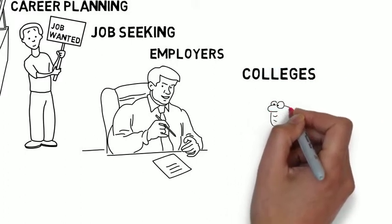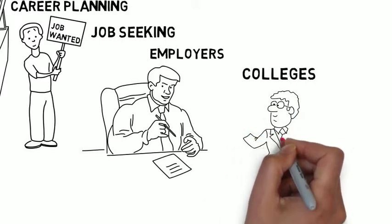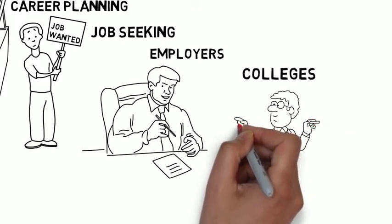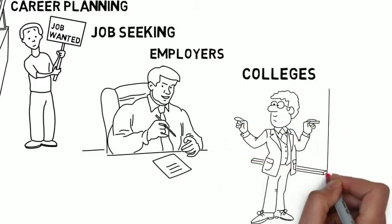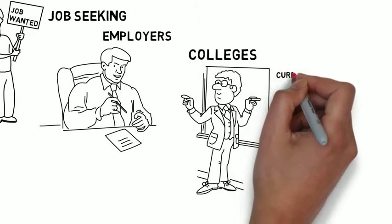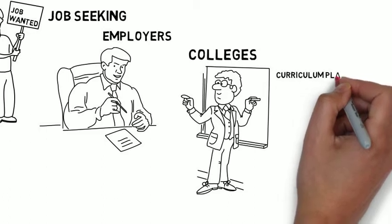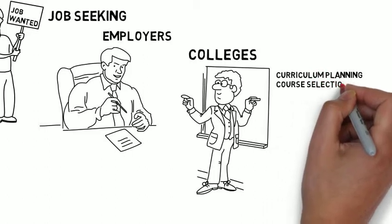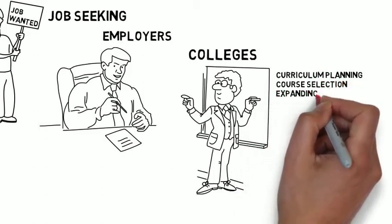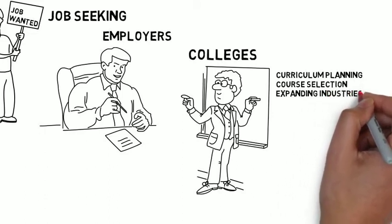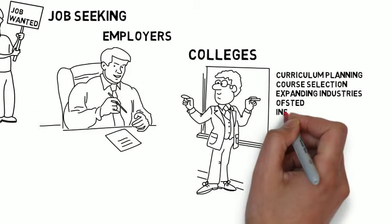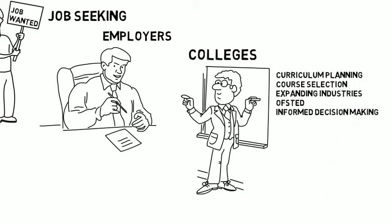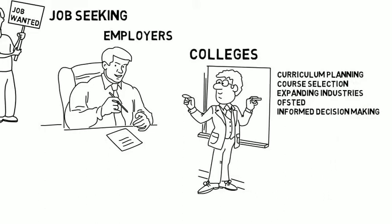It's becoming increasingly important for educational institutions to educate and train young people in the skills that are relevant for future employment. Colleges are particularly focused on meeting the labor demands for their local employers. The person responsible for curriculum planning will want to know what skills are employers looking for in my area, what courses do I need to provide to deliver these skills, and what courses are less relevant? Are the industries that I service expanding or declining? And Ofsted will want to determine the relevance of the courses provided to a college's catchment area and in so doing be confident that informed decisions are being made.